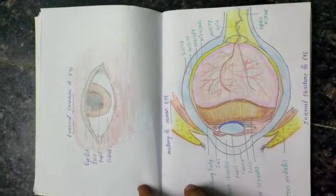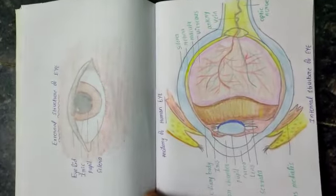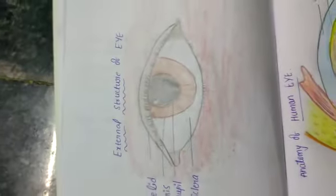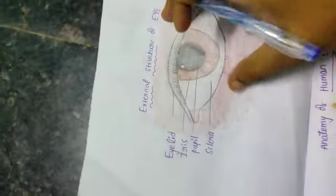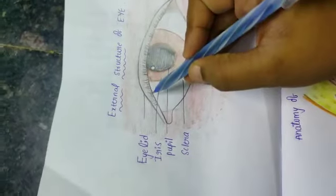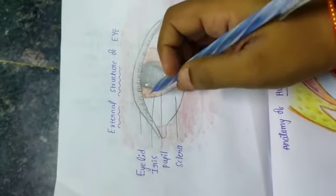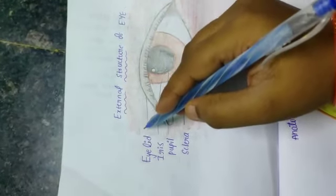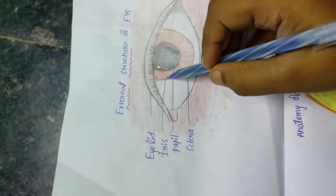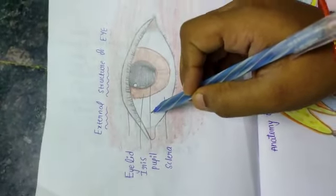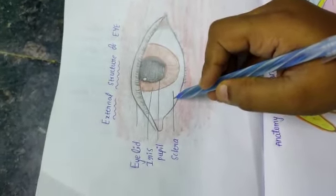Hello everyone, today we will discuss the anatomy of human eye. First, we will see the external structure. The outer covering layer which helps in protecting our eye from dust is called the eyelid. The inner layer is called iris, and the ball-like structure is called pupil. The left area of the eye is called sclera.